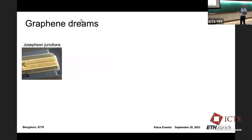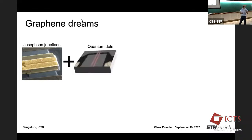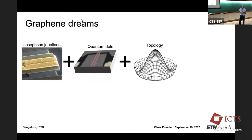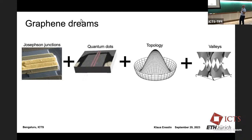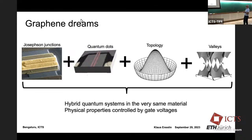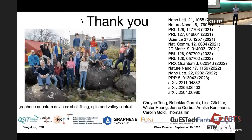We can dream a little: we can build Josephson junctions and very nice quantum dots, think about spin qubits, dream about valley qubits. We can build a transmon in magic-angle graphene. Topology is built in and tunable by gate voltages. The additional valley degree of freedom gives more tuning knobs. All of this exists in the very same material system, controlled entirely by gate voltages — a unique opportunity to play with different types of qubits and build systems not possible otherwise. Thank you.